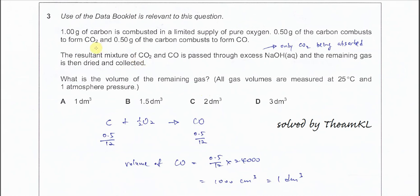Question 3: 1 gram of carbon is combusted in limited supply of pure oxygen. 0.5 gram of carbon will form CO2, 0.5 gram of carbon will form CO, and the mixture of CO2 and CO is passed through sodium hydroxide solution.